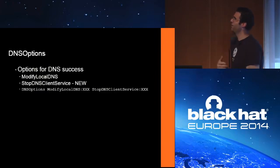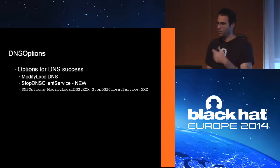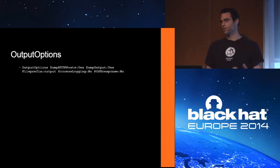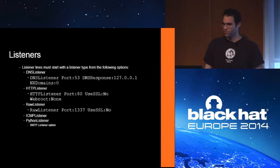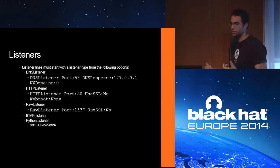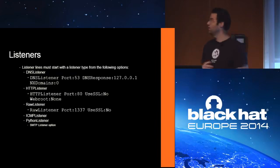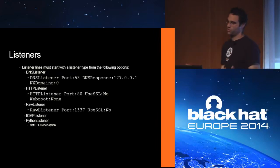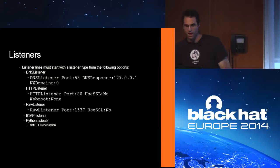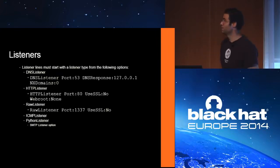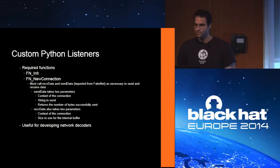Output options: do you want to dump HTTP POST blobs, where to put them, what to call the file. Listener types include DNS, HTTP, RAW (which displays bytes but doesn't send traffic back), ICMP, and a Python extension listener. It comes with an SMTP listener as an example because SMTP is a pretty simple protocol — the Python extension for it is only about 50 lines and covers most of the protocol. It also works with HTTPS. For Python listeners, you have to write two functions: an init function and a new connection function. Whenever there's a new connection, it calls your Python script. You call send and receive data whenever you want. It's super useful for malware with custom encodings or custom protocols.